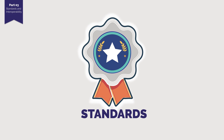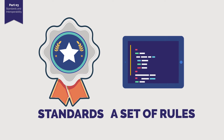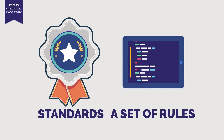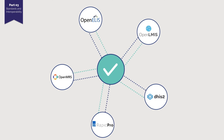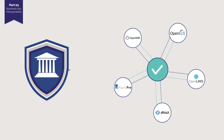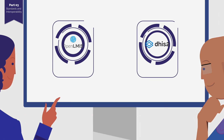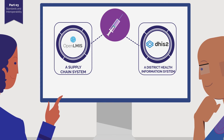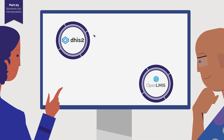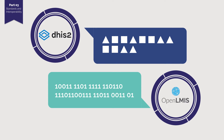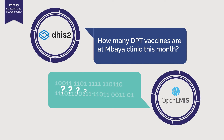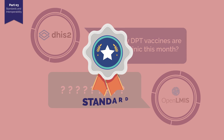What are standards? In software, standards are a set of rules that allow information to be shared in a uniform and consistent manner across any application. They are approved and published by an authoritative official organization. As the systems are currently configured for Lucy and Isaac's immunization campaign, OpenLMIS and DHIS2 cannot currently communicate with each other. DHIS2 has been trying to ask OpenLMIS a simple question: how many DPT vaccines are at Mbio Clinic this month? But they cannot understand each other without a common set of standards.